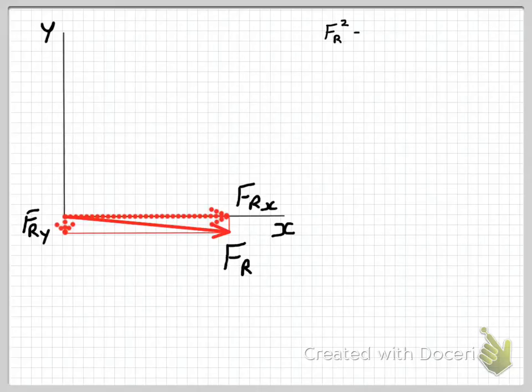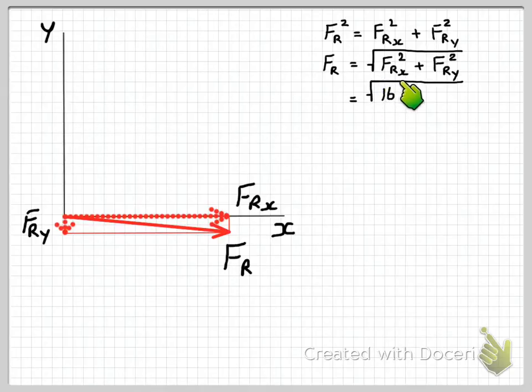So using Pythagoras theorem, we know that FR squared will be equal to FRx squared plus FRy squared. So our resultant FR will just be the square root of the sum of the sides squared. So we get our total resultant force of 17.08 Newtons.